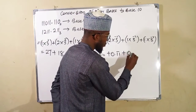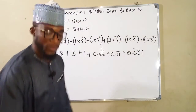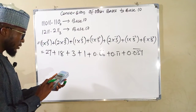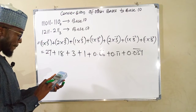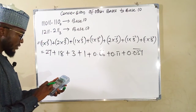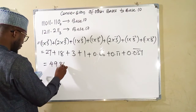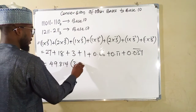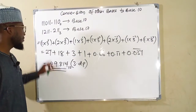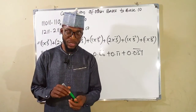And 3 to the power negative 3 is 1 over 27, which is approximately 0.037. Putting it all together we have 27 plus 18 plus 3 plus 1 plus 0.666 plus 0.111 plus 0.037, which gives us 49.814 to three decimal places. So this is our answer in base 10. They are exactly the same thing, just with different bases — this is in base 3 while this is in base 10. That is all I have for you today. Thank you for watching. Do have a nice day.